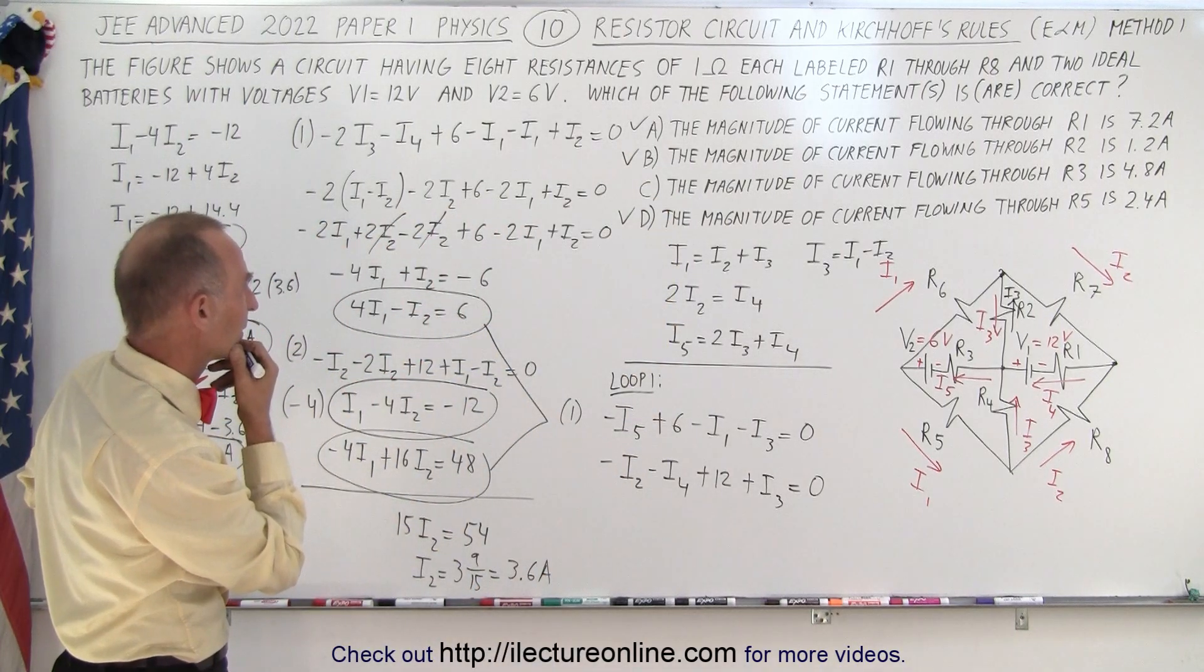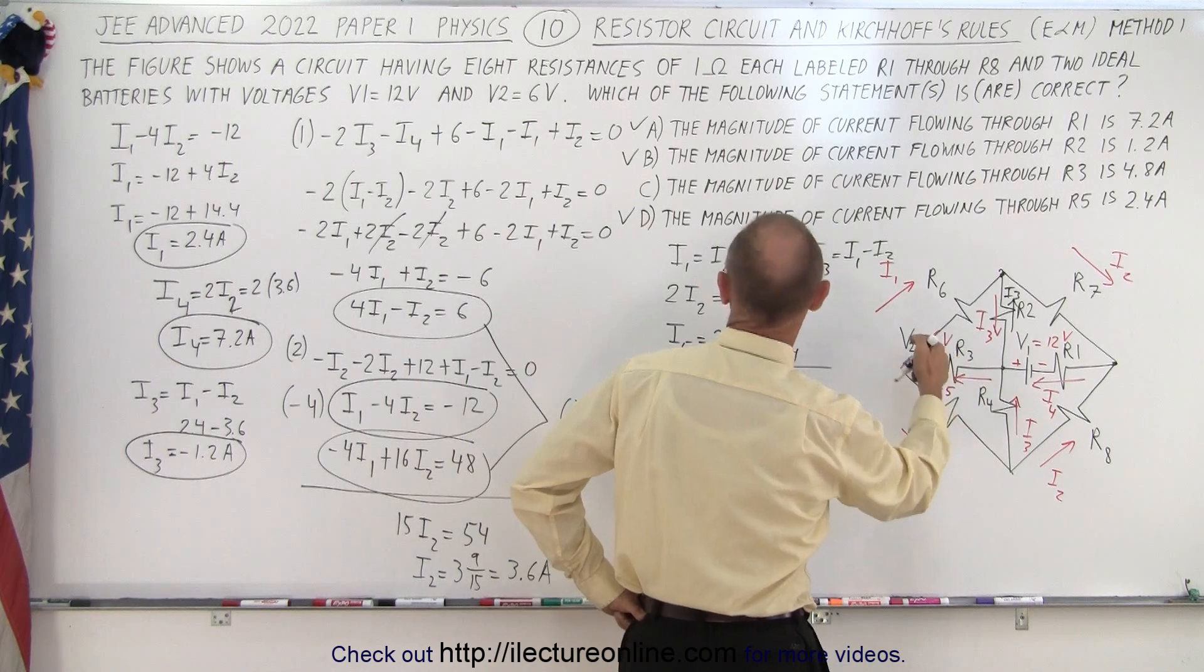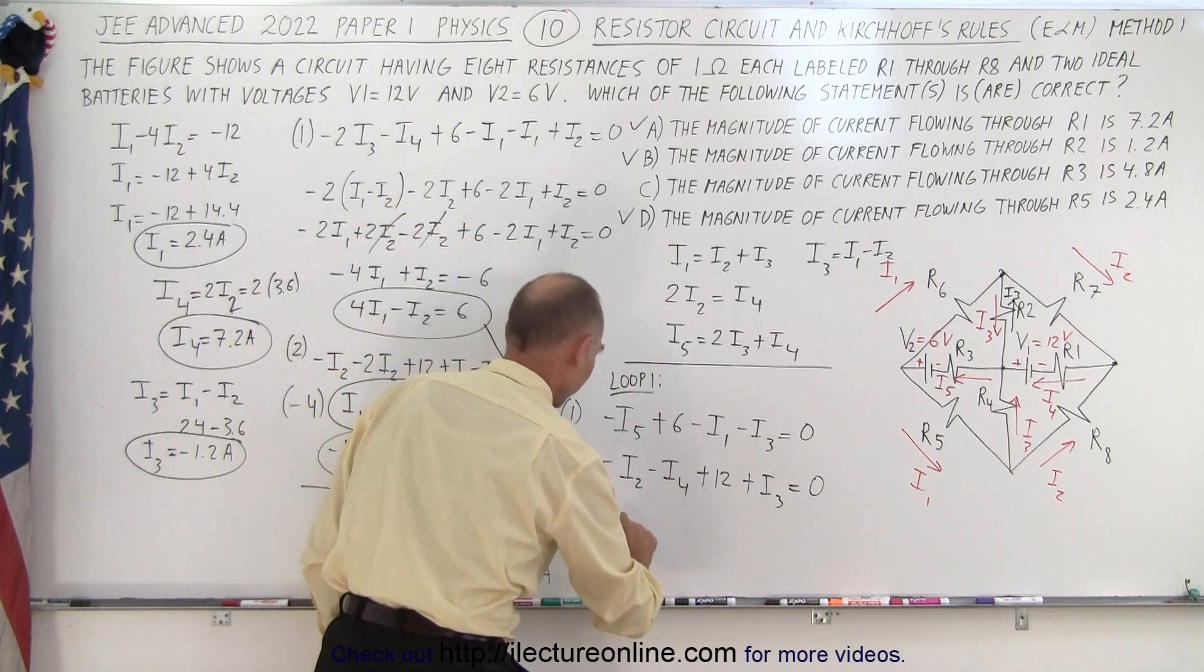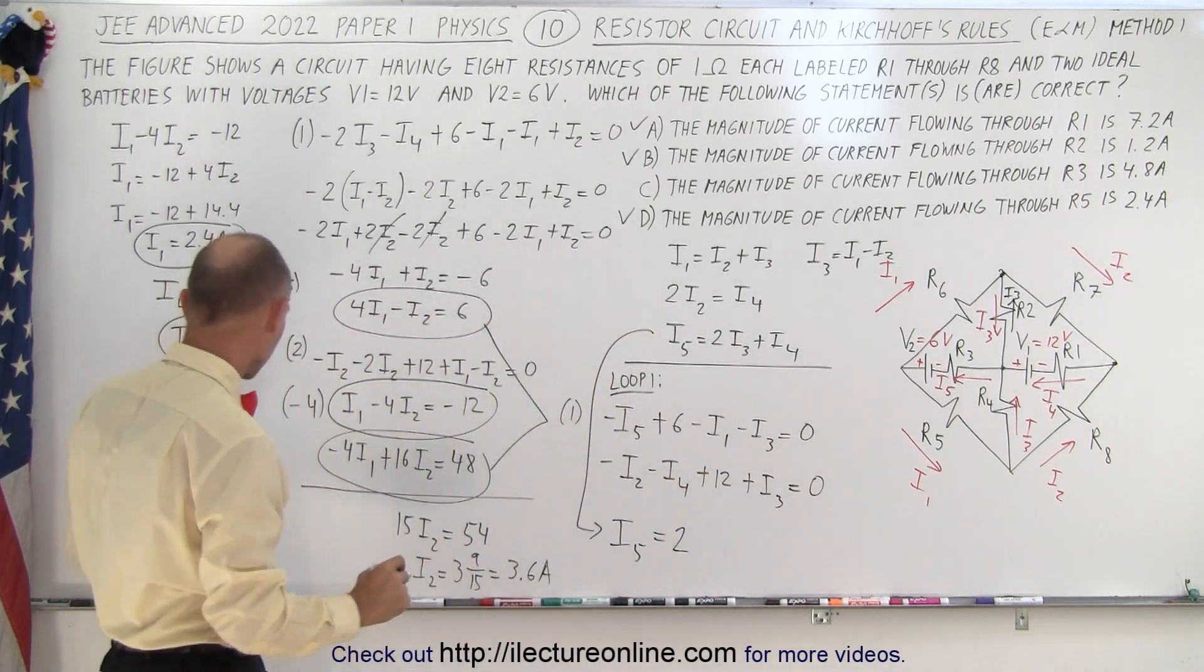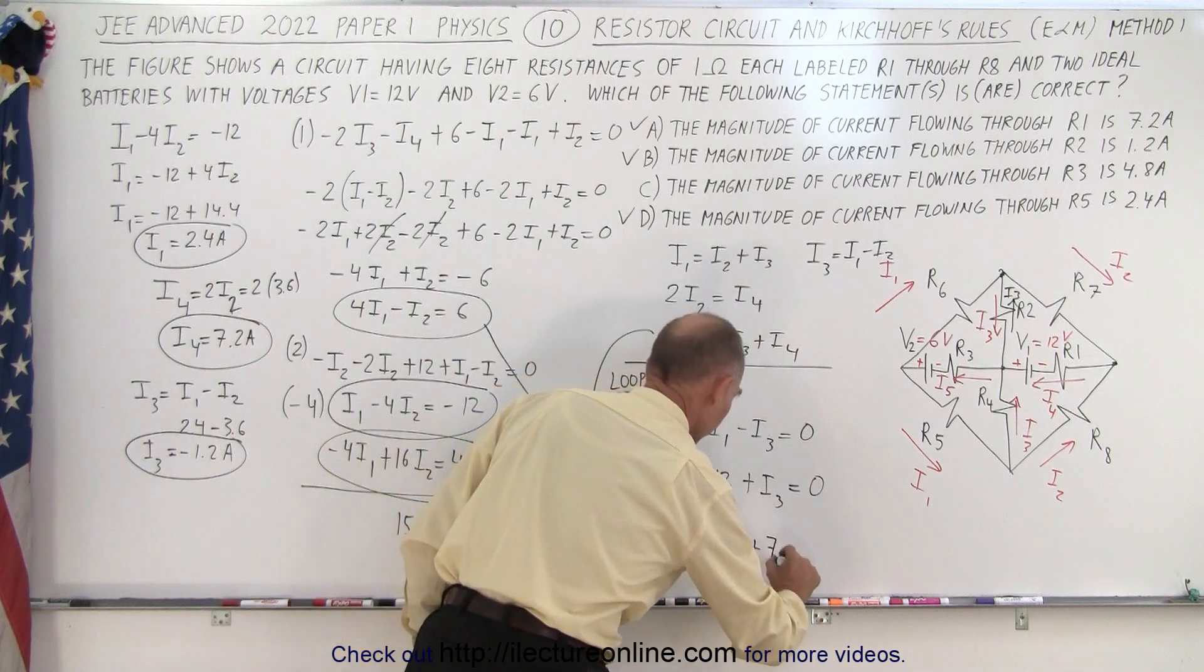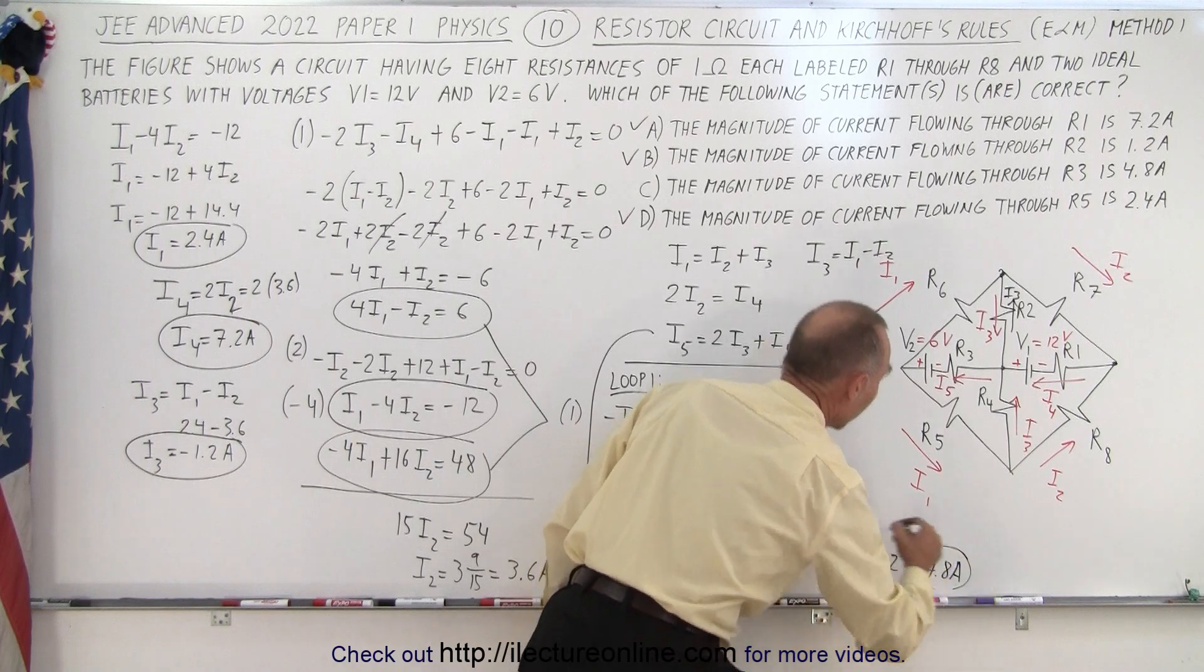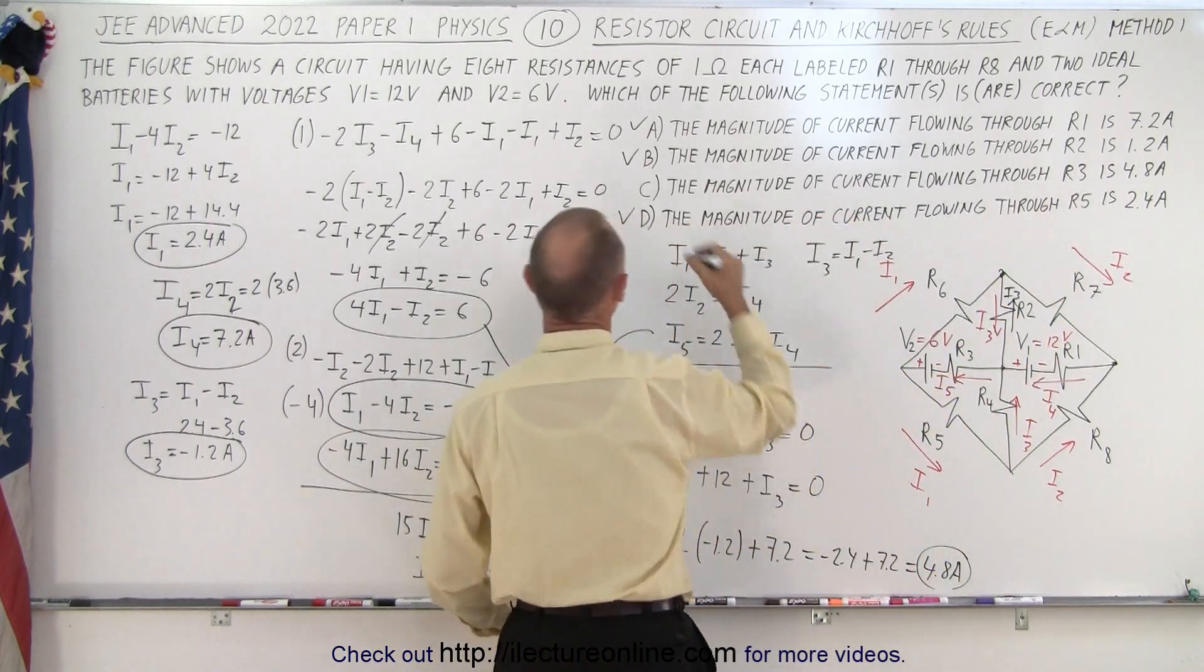So then, what do we have left? I5, R5, let's see. I5 runs through R3. I need the current going through R3, which is right here. So I need to find I5. I5 is 2I3 plus I4. So I5 is equal to 2 times I3. In my case, I3 is a minus 1.2, so minus 1.2, plus I4, and I4 was 7.2. So that gives me minus 2.4 plus 7.2. That's 4.8 amps. And, sure enough, the magnitude of the current flowing to R3, which is I5, is 4.8 amps, so we know that that's correct as well.